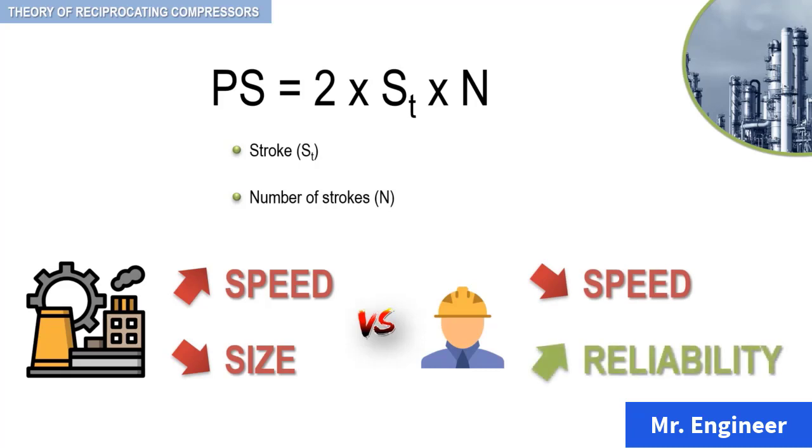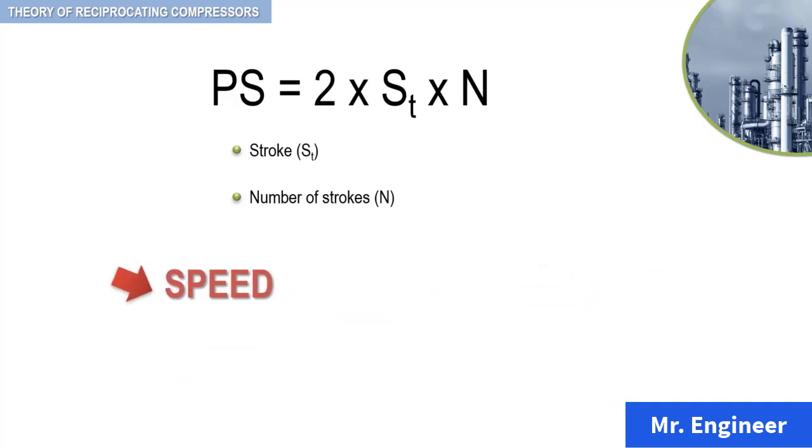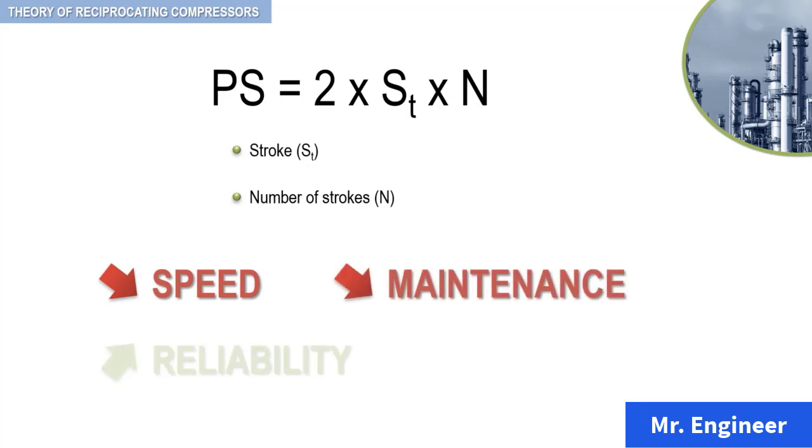As is true for so many other cases, economics referees this issue. An obvious reason to limit the speed is maintenance expense. The lower the piston speed, the lower the maintenance, and the higher the reliability.